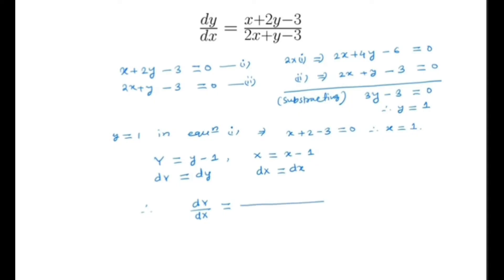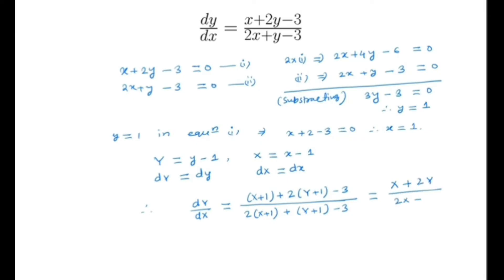By substituting, we get dY/dX. Note that x = X + 1 and y = Y + 1, so the numerator becomes (X + 1) + 2(Y + 1) - 3 = X + 2Y, and the denominator becomes 2(X + 1) + (Y + 1) - 3 = 2X + Y. So we get the homogeneous differential equation dY/dX = (X + 2Y)/(2X + Y).